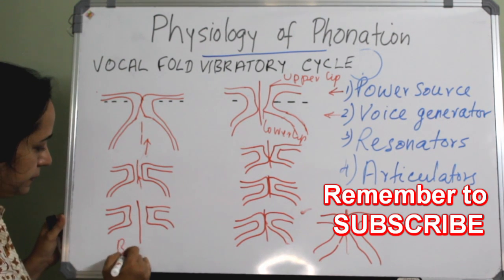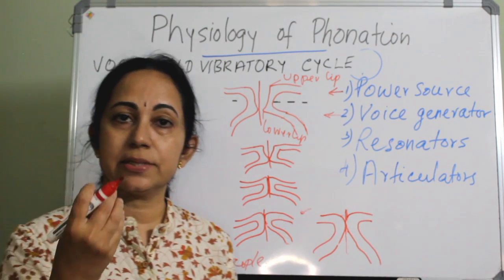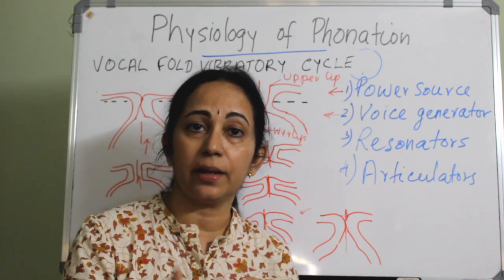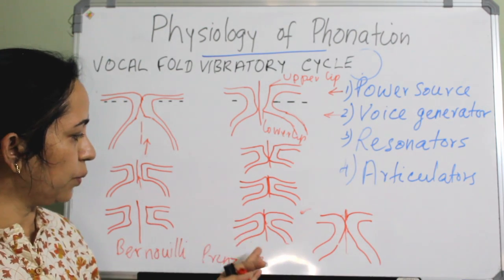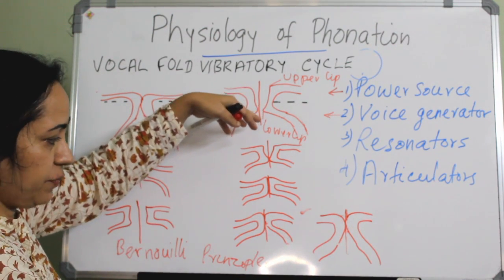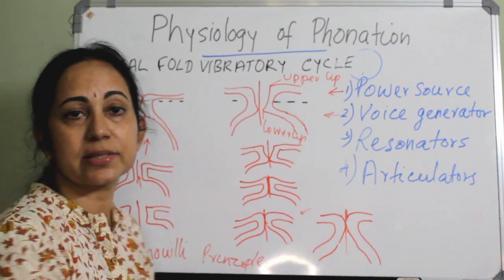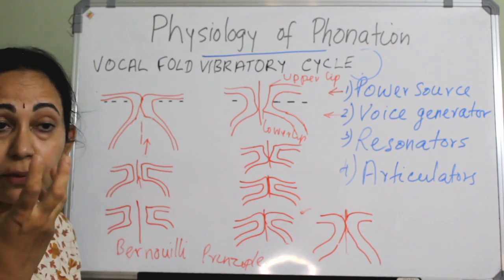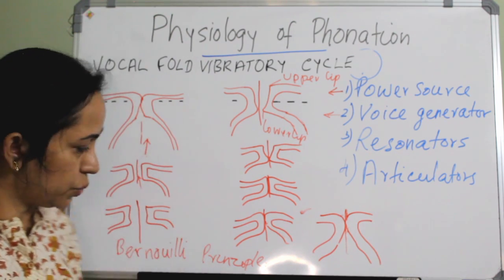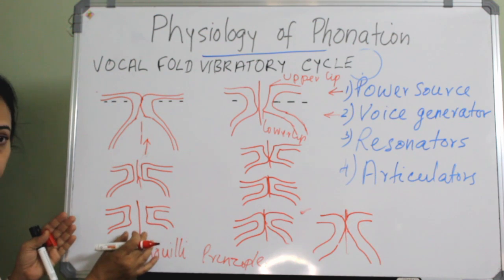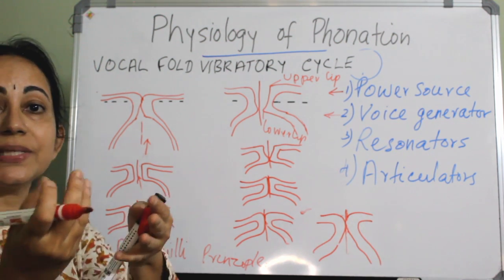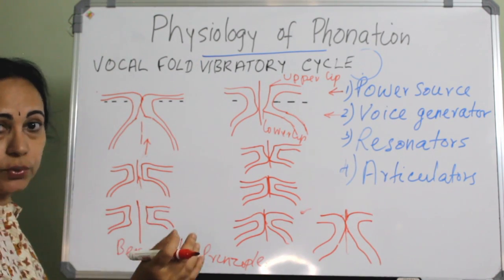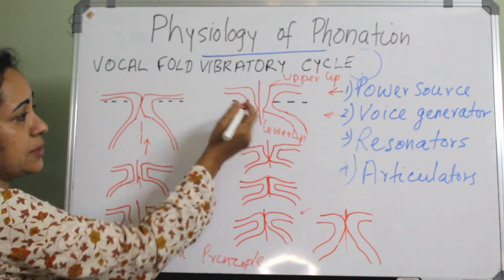After that there is the Bernoulli effect. The Bernoulli principle states that at a constriction, velocity is high and pressure is low. Here the air moves from the subglottis to the supraglottis through the glottis — a constriction. When passing through this constriction, the pressure drops, and the mucosa of the vocal folds is sucked into that low-pressure area.